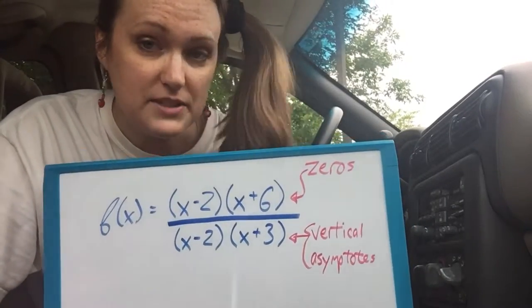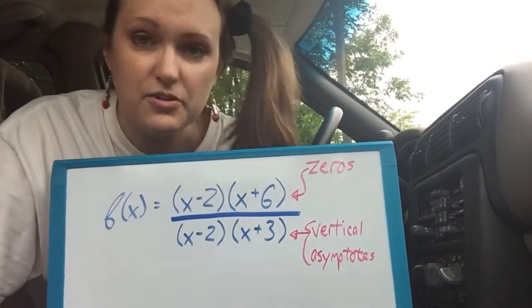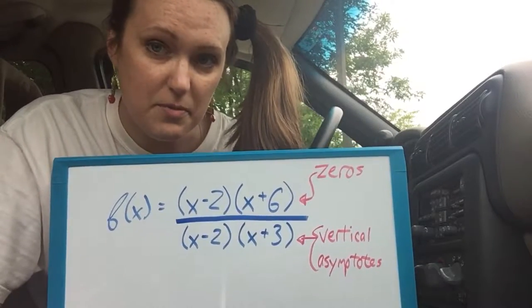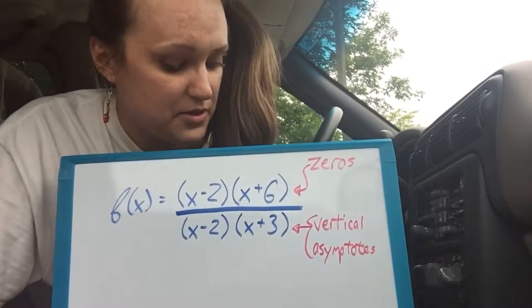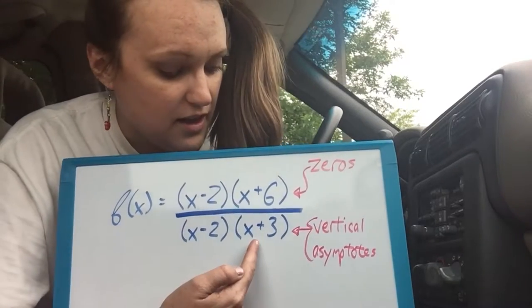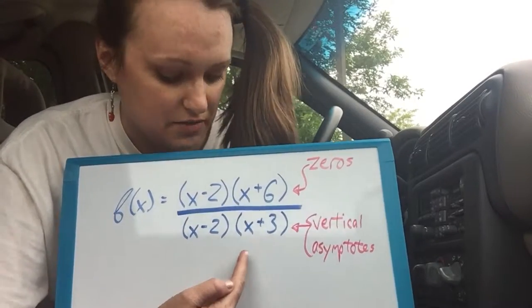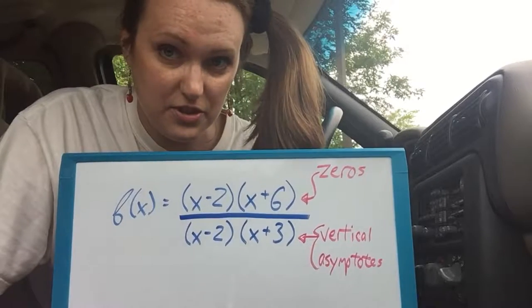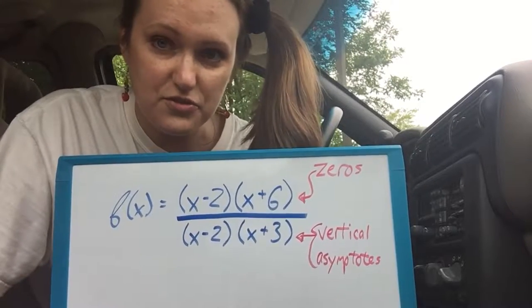The bottom only tells you about the vertical asymptotes and you only get vertical asymptotes from the bottom. The vertical asymptotes here are gonna be x equals negative 3 and x equals positive 2 if you're looking at those factors only.